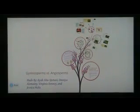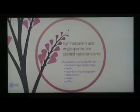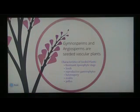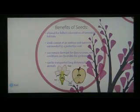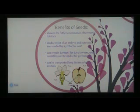Gymnosperms versus angiosperms. Gymnosperms and angiosperms are seeded vascular plants. The characteristics of seeded plants include their dominant sporophyte stage, seeds, reproductive gametophytes, heterospory, ovules, and pollen. The benefits of seeds allow for further colonization of terrestrial habitats. Seeds consist of an embryo and nutrients surrounded by a protective coat, can remain dormant for days to years until conditions are favorable for germination, and can be transported long distances by wind or animals.